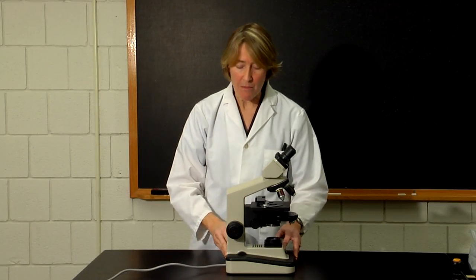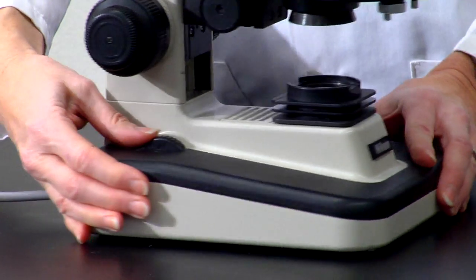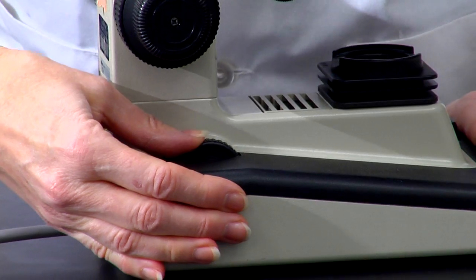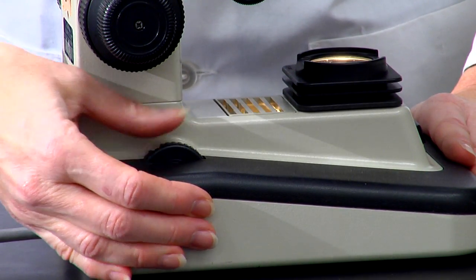The base of the microscope contains the light source, and there is a switch along the side which turns the light on, as well as adjusting the intensity of the light source.